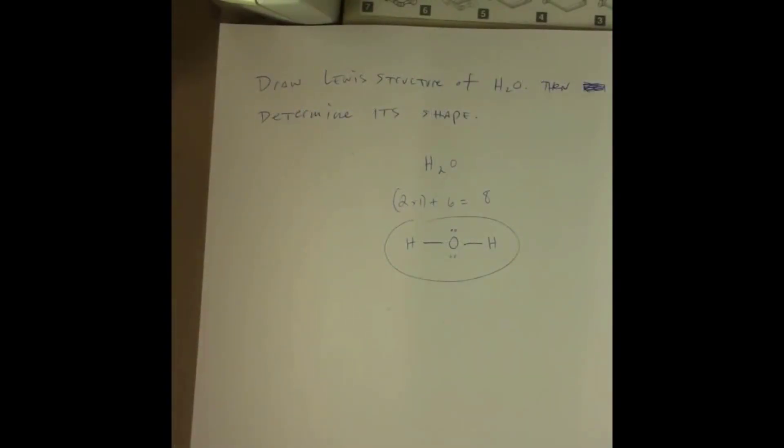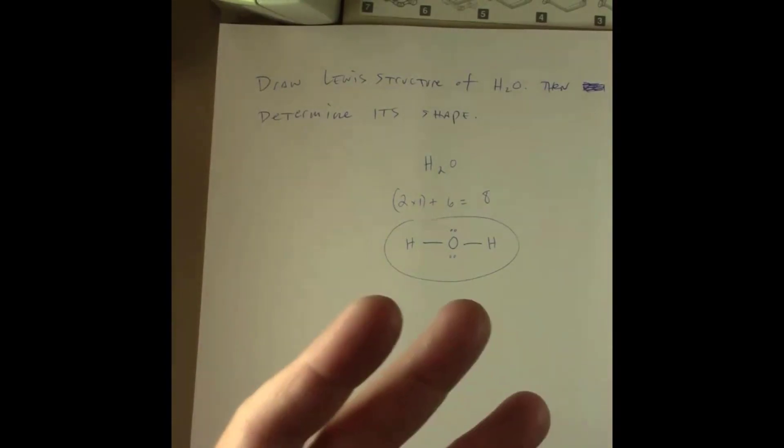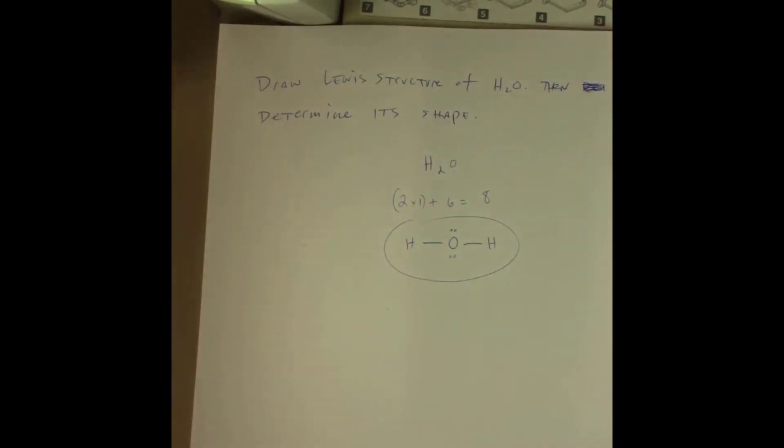Much like we had in our earlier example of carbon tetrachloride, in the case of water H2O, I have a central atom with four things around it. Unlike carbon tetrachloride, not all four of those things are atoms. One of those things is a hydrogen, another is a hydrogen, and then the other two things are each one set of lone pair electrons.